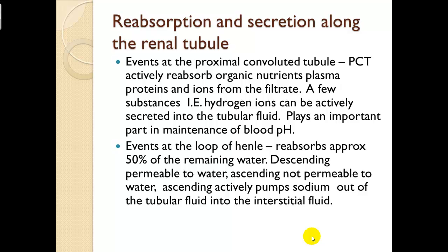Reabsorption and secretion along the renal tubule — events at the proximal convoluted tubule: it actively reabsorbs organic nutrients, plasma proteins, and ions from the filtrate. A few substances, such as hydrogen ions, can be actively secreted into the tubular fluid. This plays an important role in the maintenance of blood pH. If there's too much hydrogen ion concentration in the blood, it simply moves into the urine filtrate, making the urine more acidic.